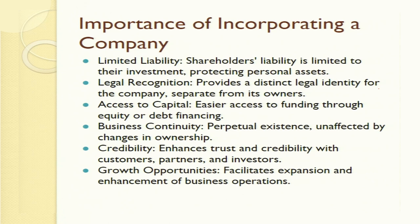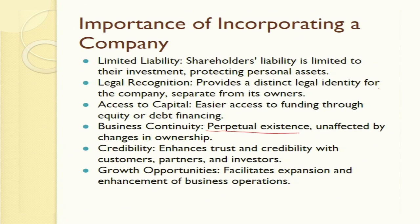Access to capital: there is easier access to funding through equity or debt financing. Company structures under company law are basically designed for specific purposes, making money easily available to those who deal in this business. Business continuity is governed by one basic rule: perpetual existence. Perpetual existence means persons may come or go without any effect on the working of the company. After the death of a shareholder, the company's holdings transfer to their legal heirs and the company remains as it is.